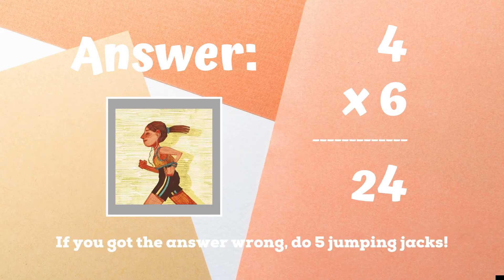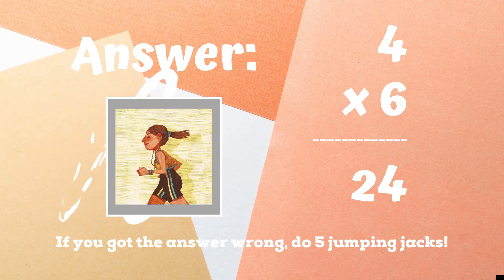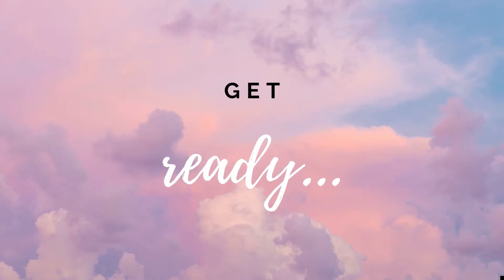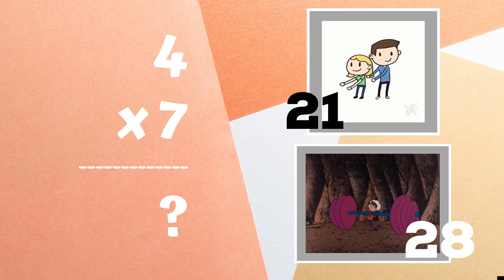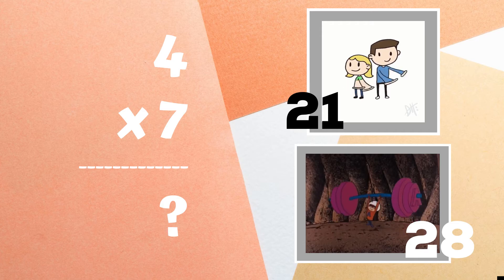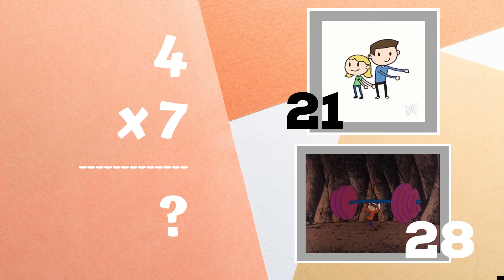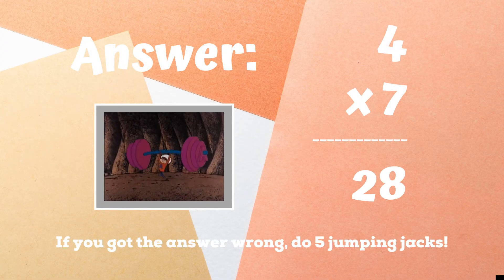If you were running in place because you got the answer 24, great job. If not, five jumping jacks. Ready, go. Get ready. Four times seven equals — copy the exercise next to the numbers you think are correct. If you got 28, you got the right answer. Great job.